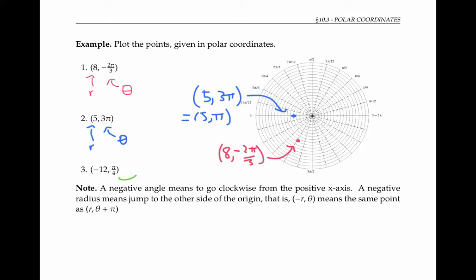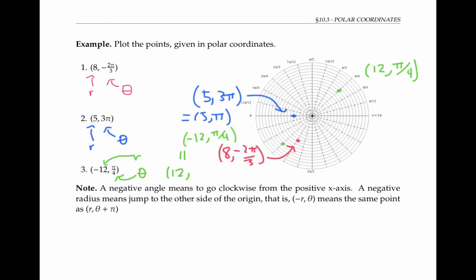The next point has an angle of pi over four and a radius of negative 12. The negative radius means that I need to jump to the other side of the circle before I plot the point. In other words, instead of plotting the point at an angle of pi over four and a radius of 12, which would be about right here, I go to the opposite side of the circle and plot it at the same distance from the origin, but 180 degrees or pi radians around the circle over here. I could have also labeled this point using a positive radius of 12 and an angle of pi over four plus pi, or five pi over four. In general, a point with polar coordinates of negative r, theta means the same point as r, theta plus pi.